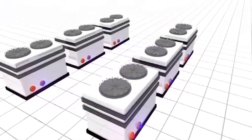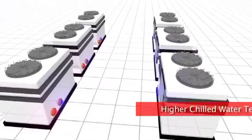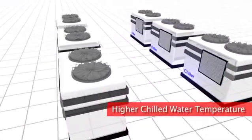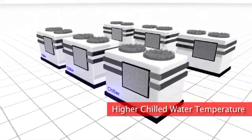With the hot aisle containment we were able to raise our chilled water temperature. This for us meant that we could get between four to six thousand hours a year of free cooling and that directly translates into about a million dollars a year in power savings once the facility is full.